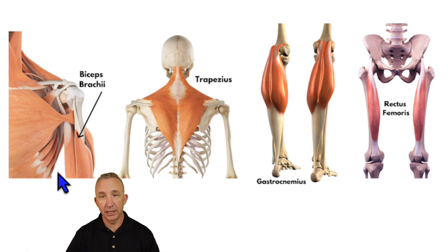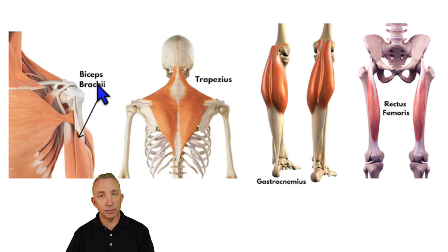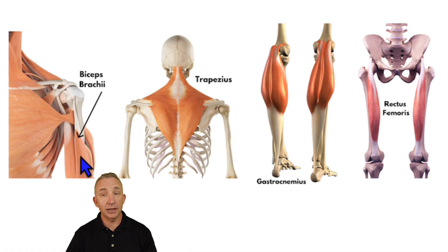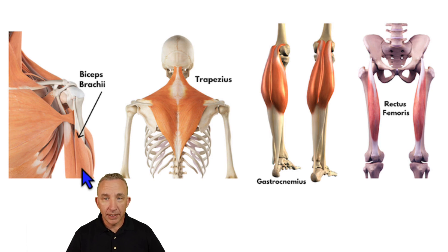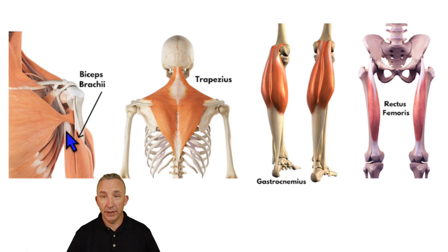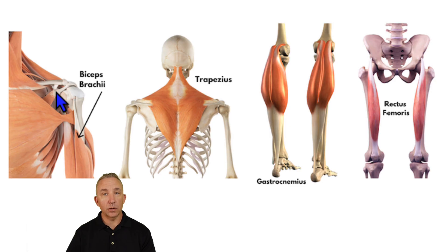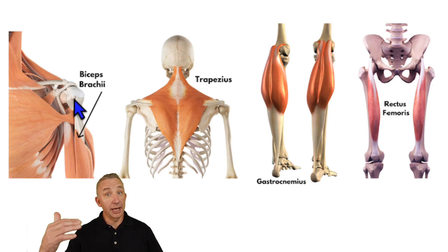I'll start with the biceps brachii on the anterior side of the arm. We call it the biceps because it has two heads. It has a long head and a short head — the long head is on the lateral side (L for lateral), and the short head is on the medial side. Both heads connect up to the scapula. The short head originates at the coracoid process of the scapula. The long head comes up and wraps around the supraglenoid tubercle, so the supraglenoid tubercle is the origin for the long head.